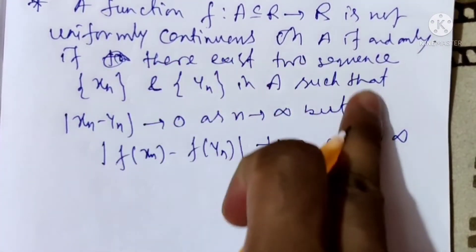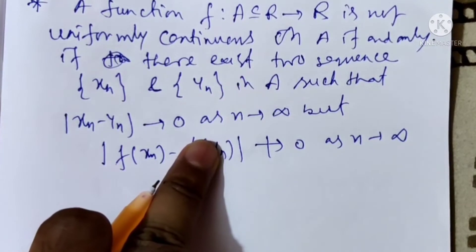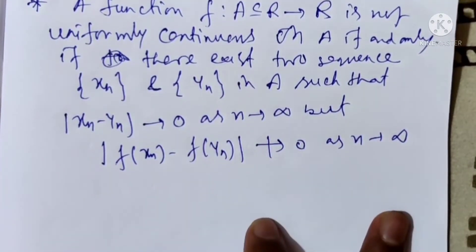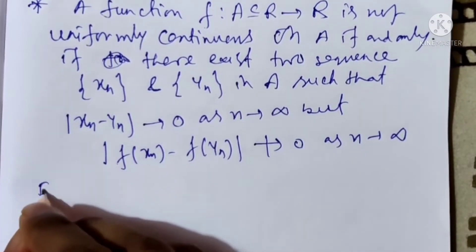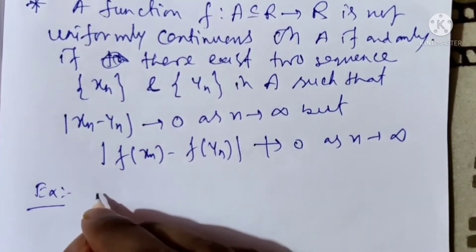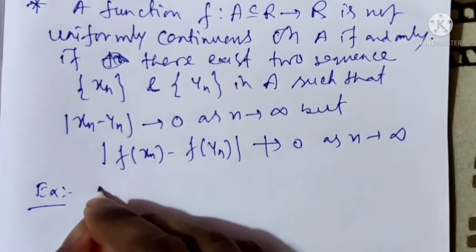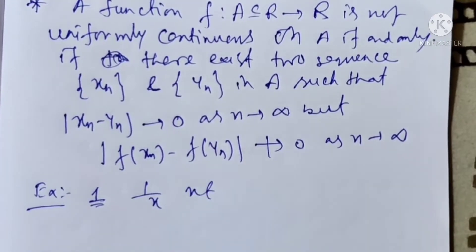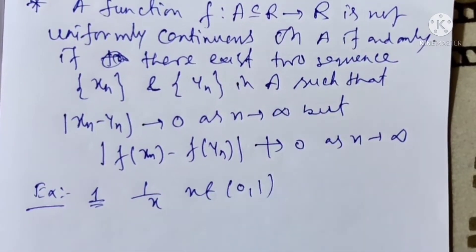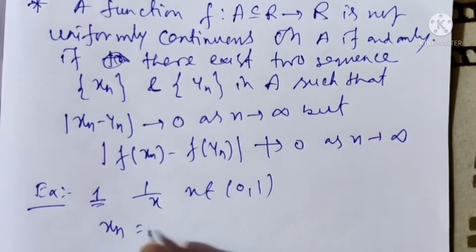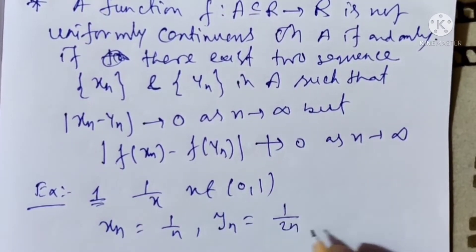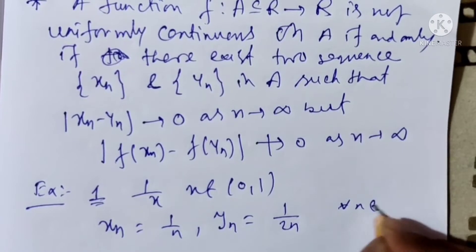Using this theorem, we show that some functions are not uniformly continuous. First example: f(x) = 1/x, x belongs to (0,1). Let xn = 1/n and yn = 1/(2n) for all n belonging to the natural numbers.